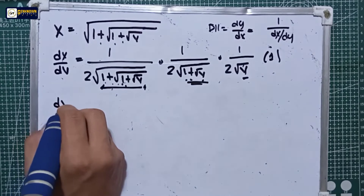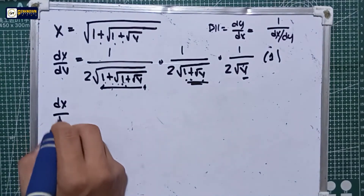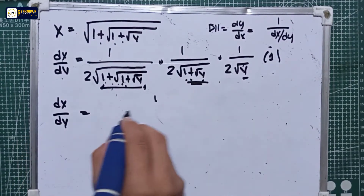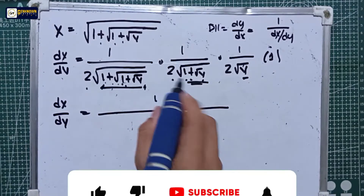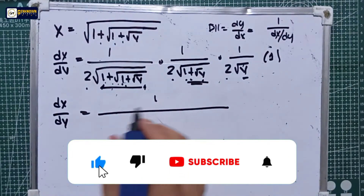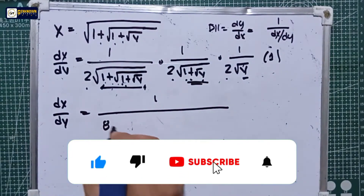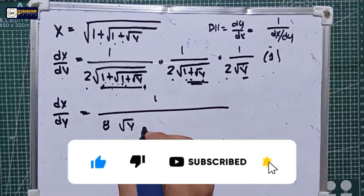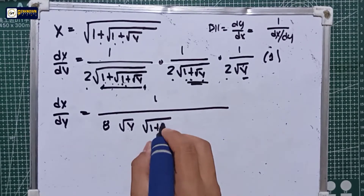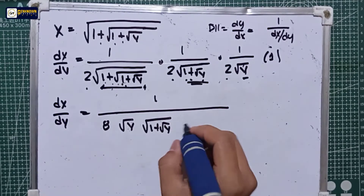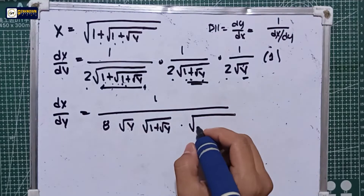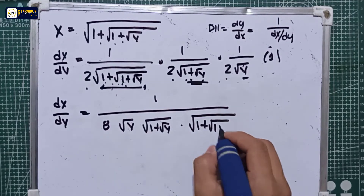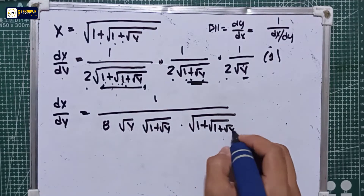Let's simplify. So dx/dy is equal to 1 over 2 multiplied by 2 multiplied by 2, which is 2 cubed equal to 8, times the square root of y, multiplied by the square root of 1 plus the square root of y, multiplied by the square root of 1 plus the square root of 1 plus the square root of y.